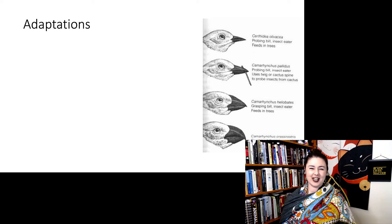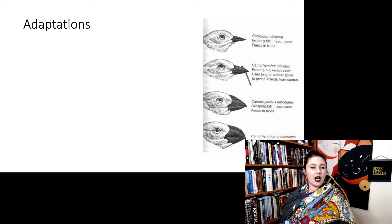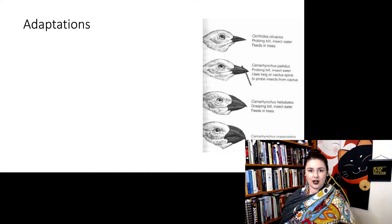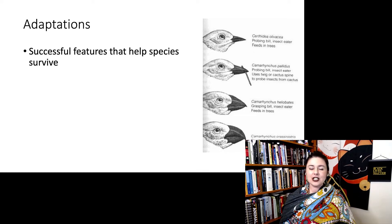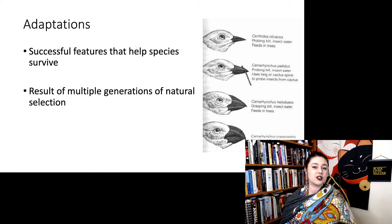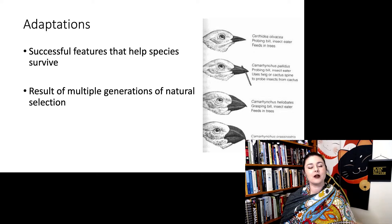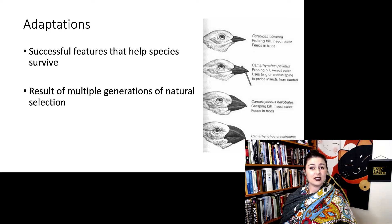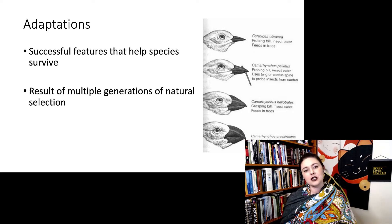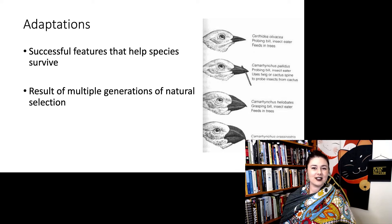First, let's remind ourselves what an adaptation is. Think all the way back to the beginning of evolution, especially when Darwin was defining some of these really important terms. An adaptation is any successful feature that helps a species survive. It's the result of multiple generations of natural selection. We can see here an example going back to Darwin's finches — many different species with different shaped beaks because each species had different adaptations because they fed on different food.